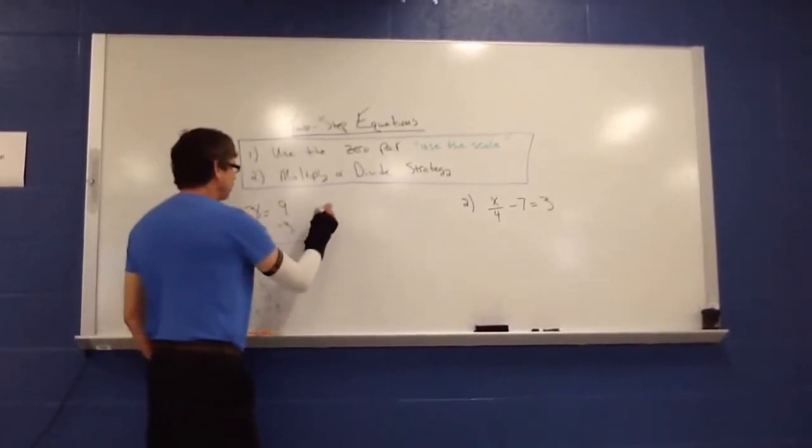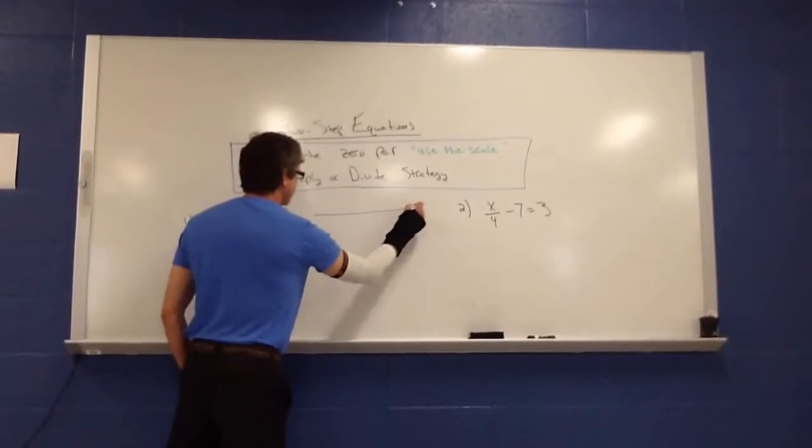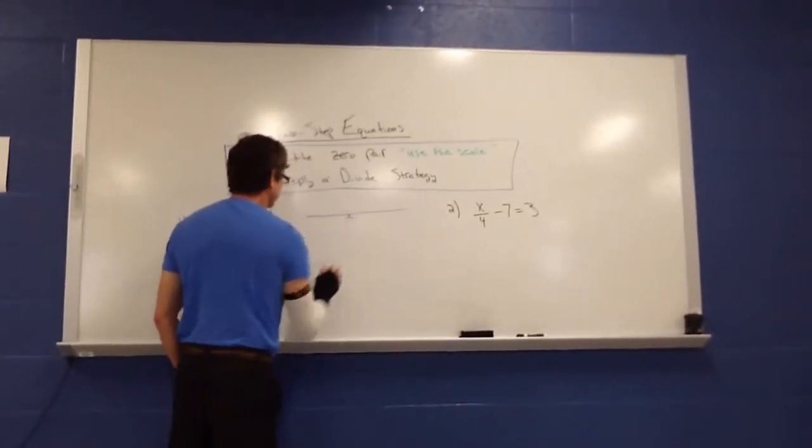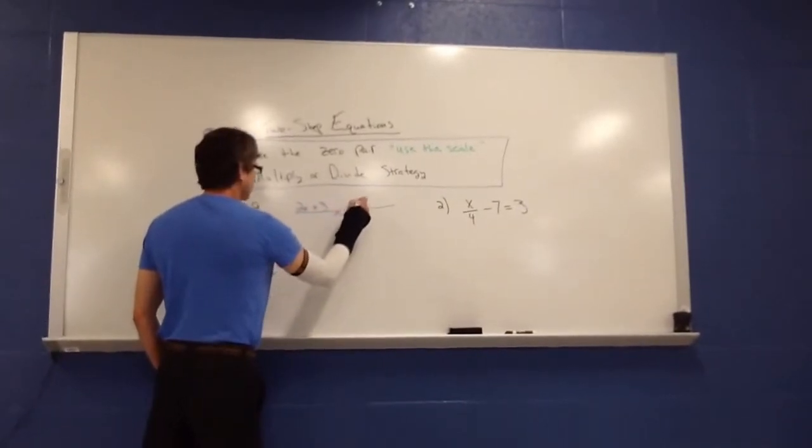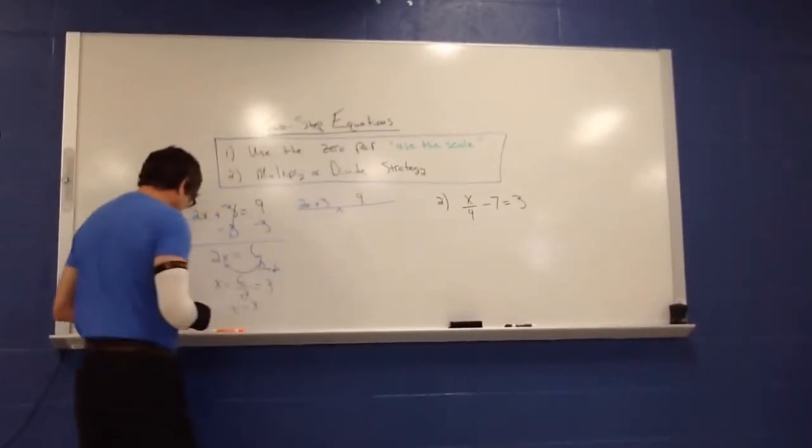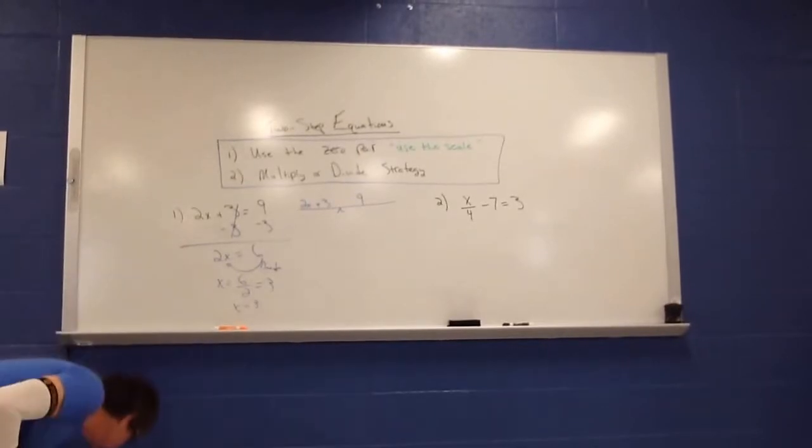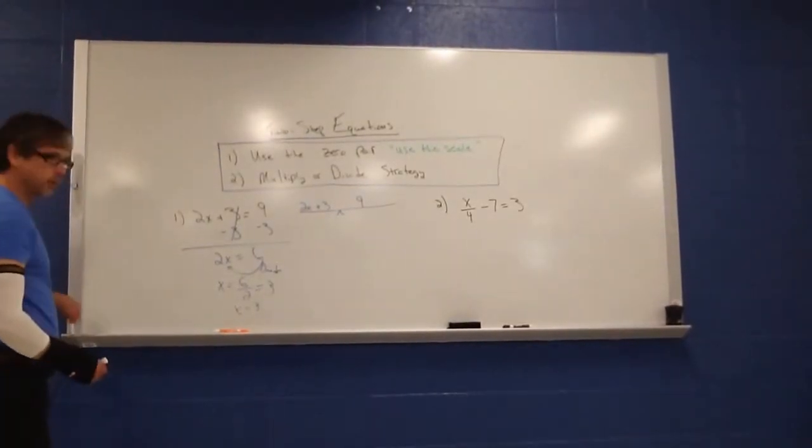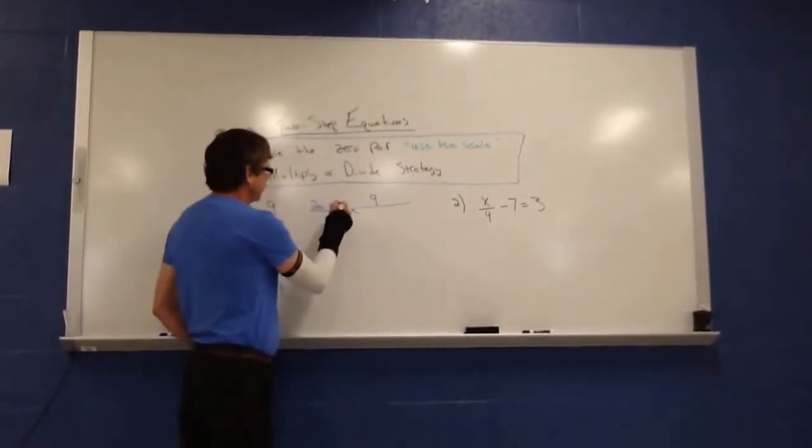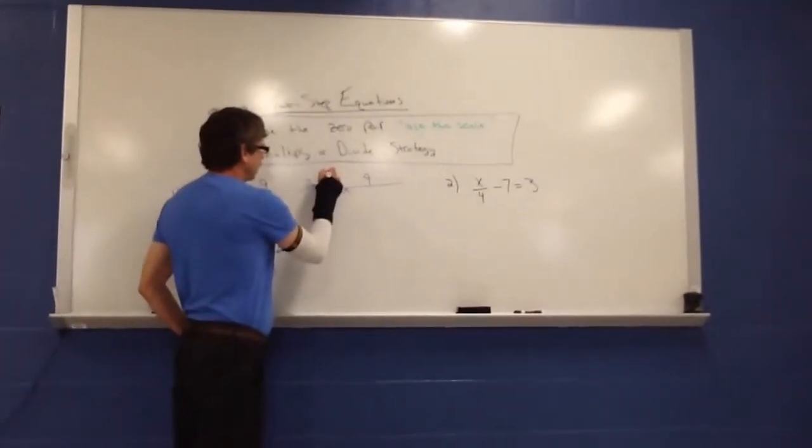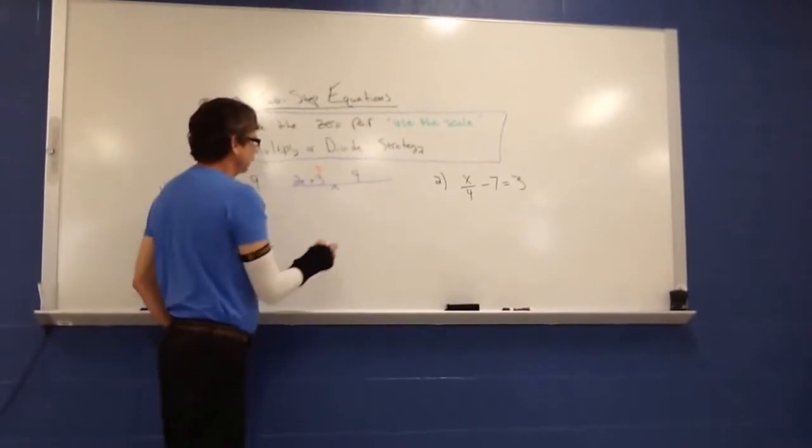Again, you can also model this using a scale. So the 2x and the 3 are on one side, and the 9 is on the other side. And what I can do, let's see here, we'll have to use a little orange pan here. To get rid of the 3, I can use its zero pair, which is a negative 3.